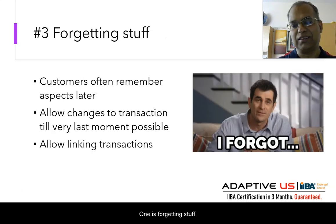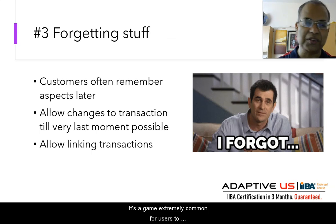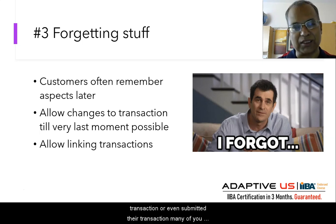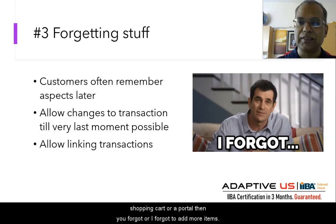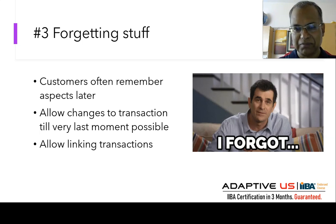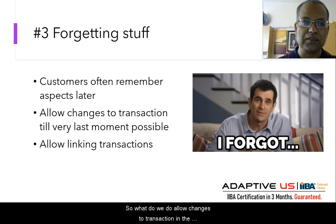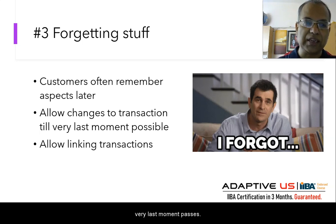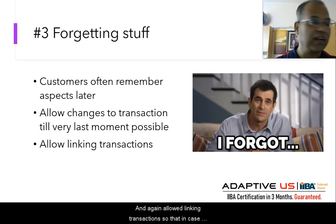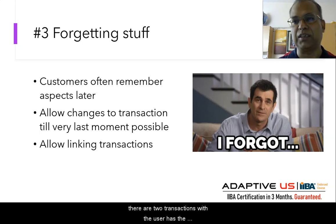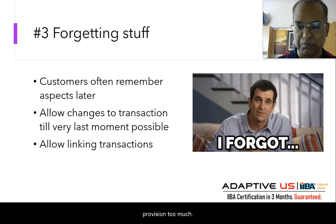The third one is forgetting stuff. It's extremely common for users to remember something after they've completed or even submitted a transaction. Many of you might have ordered items on a shopping cart and then realized you forgot two more items. What can we do? We should allow changes to a transaction till the very last moment possible. Also, allow linking transactions so that in case two transactions need to be merged, the user has the provision to do so.